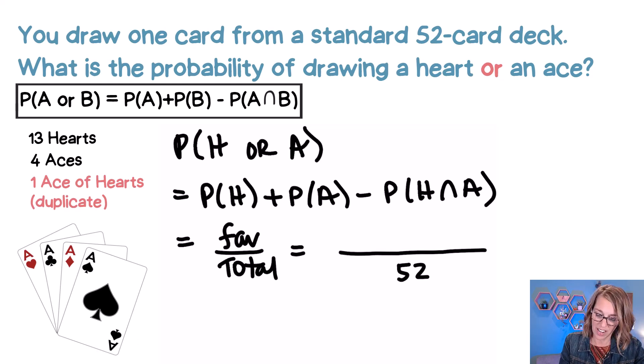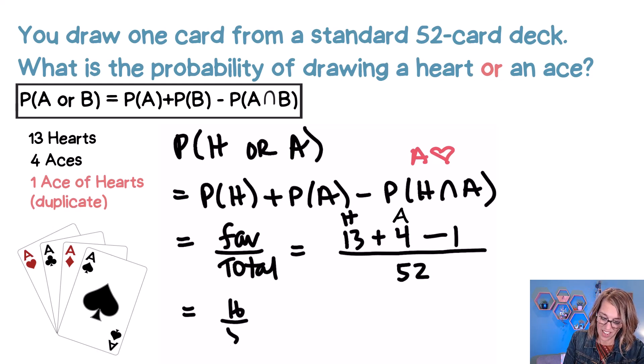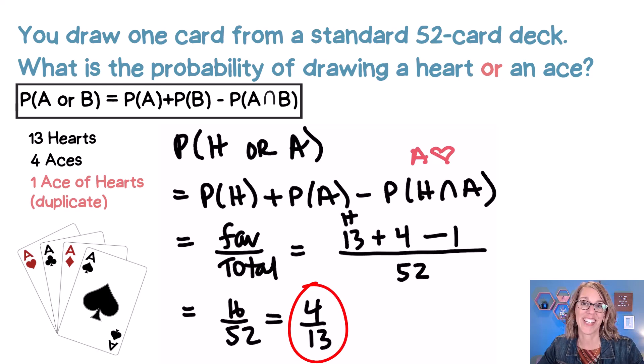Now it could be a heart and there are 13 of those. These are my hearts. It could be an ace, that would also be a favorable outcome. There are four of those, but there is one ace of hearts which is counted in both. So I want to subtract that duplicate. So as I do the math here I get 13 plus 4. I end up with 16 out of 52 which reduces to our answer of 4 thirteenths.